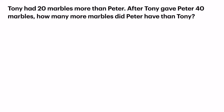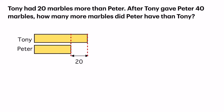Here's the model to show that Tony had 20 marbles more than Peter. Let's go through the bar model. The 20 represents this part of the model — that's more. In the story, Tony gave Peter 40 marbles. So the first thing I'm going to do is to move that 20 to the bottom.